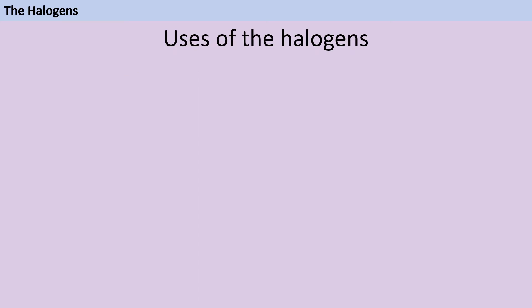The first four halogens are all really useful and important for our everyday lives. Even though fluorine on its own can be quite dangerous, compounds containing fluorine, known as fluorides, can help to prevent tooth decay, and so they're added to toothpaste and also to about 10% of the drinking water in the UK.